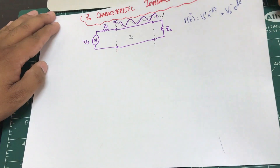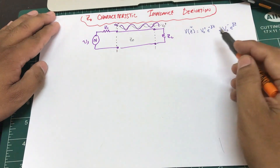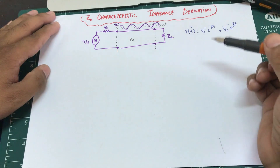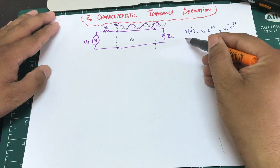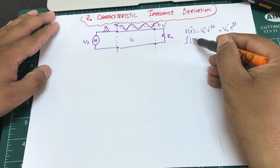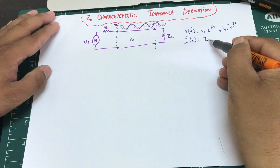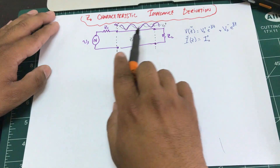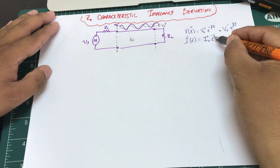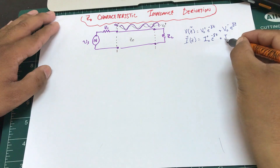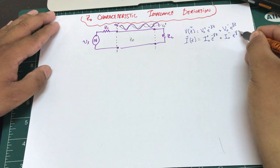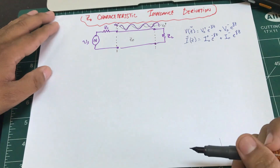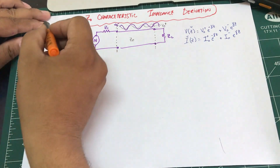This total voltage is a combination of V incident plus V reflected — whatever is going from the source and whatever is returning back from the load. Similarly, for I(z): I(z) = I0+ e^(-γz) + I0- e^(+γz), where I0+ is the forward-going current from source to load, and I0- is the reflected current.